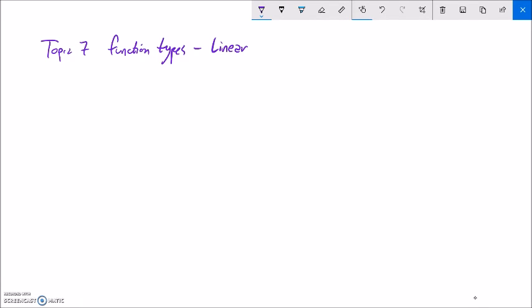All right, so we're going to talk about different function types in Topic 7. And we'll just start with linear. As you know, a linear equation is just something that is a straight line. It comes in the form y equals ax plus b. That's one form that we use.